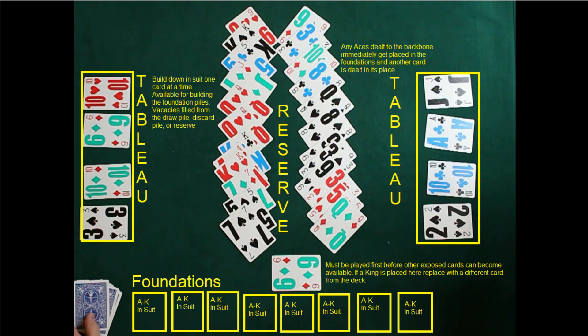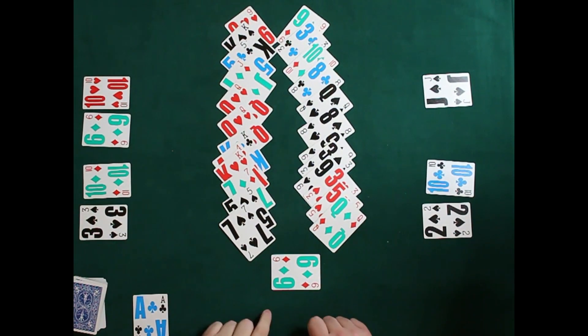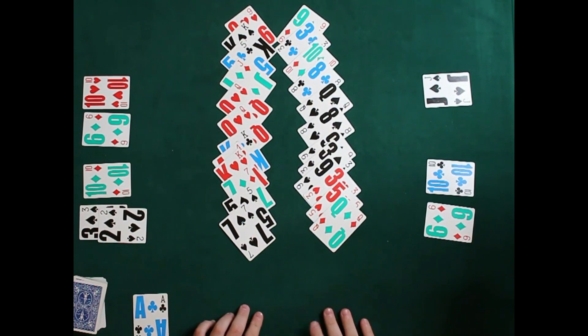Make sure you have 12 pairs of cards crossing each other and one at the bottom. If the bottom happens to be a king, go ahead and replace it with something else and bury that king back in the deck.